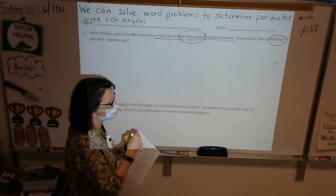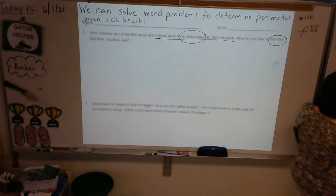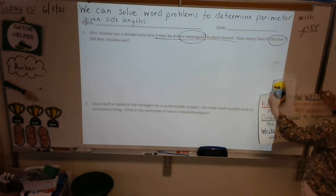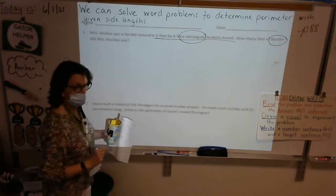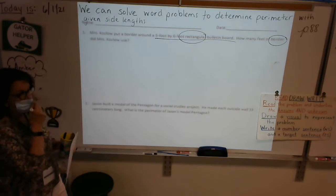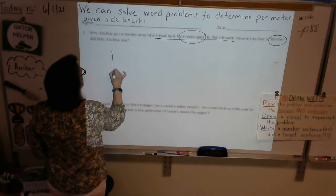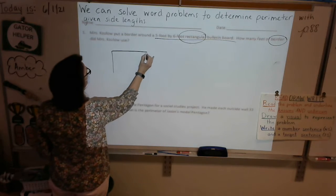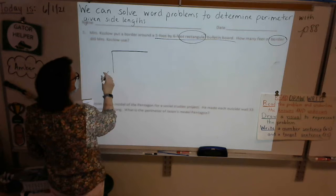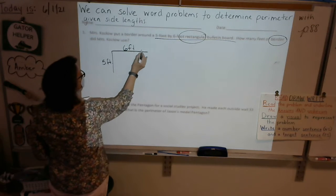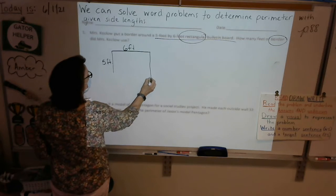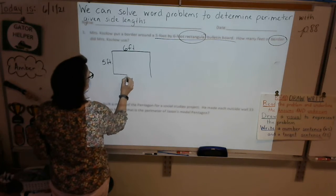So we will be using read, draw, write, boys and girls. So we just read the problem, underlined our knowns, and now you know what we want to do. We want to draw a picture, write a number sentence, and then write a target sentence. So we all know what a rectangle looks like, right? We know our geometry. So let's go ahead and draw a rectangle to represent the bulletin board. And I'm going to make this side a little bit shorter, because this is going to be my 5 foot side, and this top side will be my 6 foot side. So I just want the top to be a little bit longer.